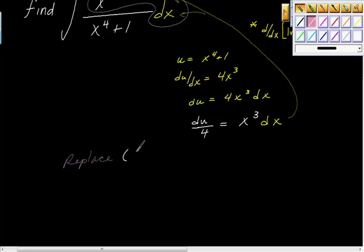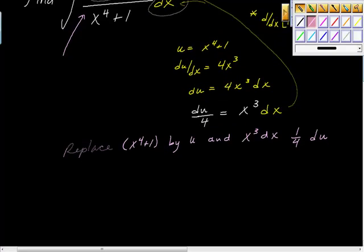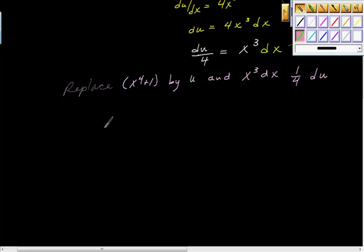Let's replace x to the fourth plus one with u, and let's replace that x cubed dx up in the numerator with one fourth du. The first thing I'm going to do is move this one fourth out. I'm going to replace my x cubed dx with this du, and du times one fourth is that one fourth du.